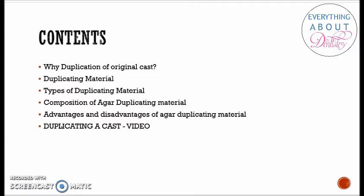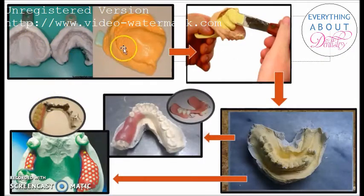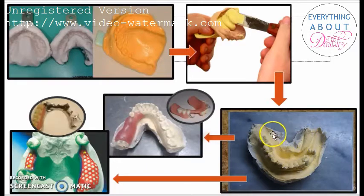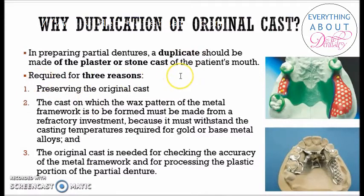At the end of this lecture there will be a video showing you how to duplicate a dental cast. Moving on to where duplication of the original cast is important: in preparing partial dentures, a duplicate should be made of the stone cast or plaster cast of the patient's mouth. Once you have taken the impression, you pour it using dental stone or plaster and a dental cast is formed.